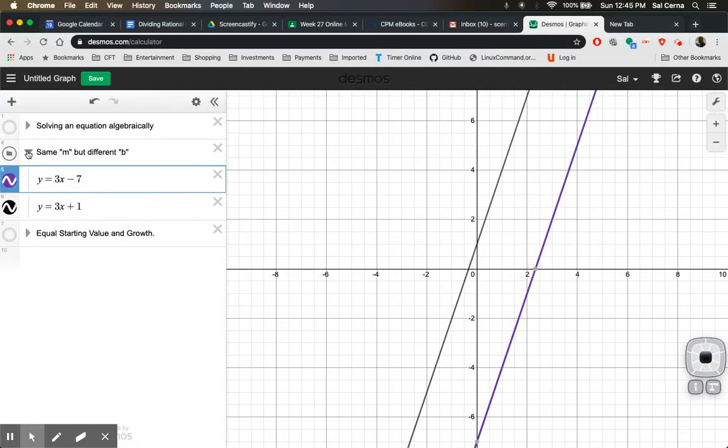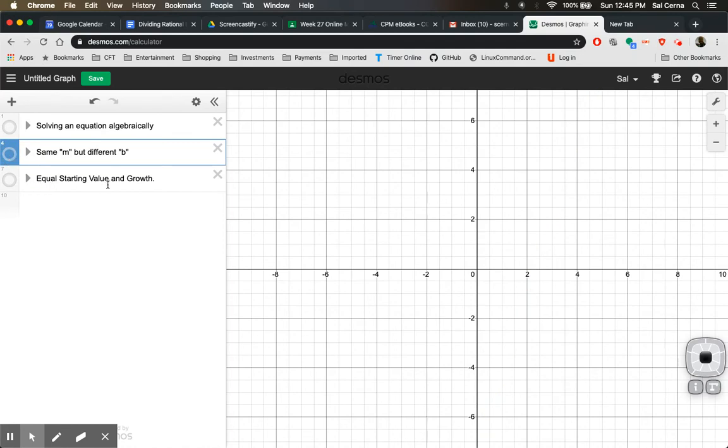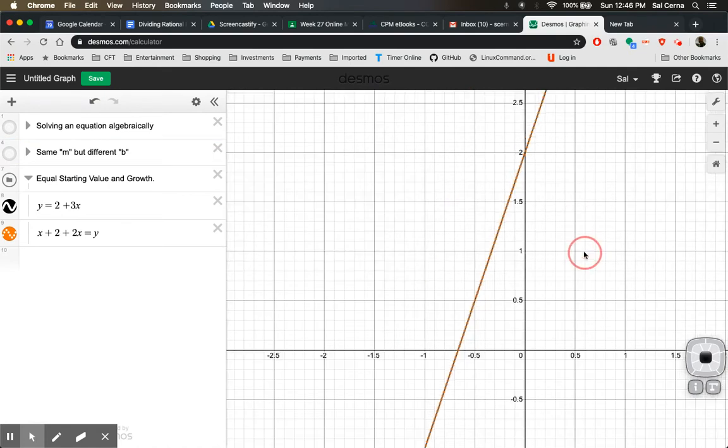I'm going to graph these two equations on Desmos and see what our linear lines or line will look like. They have equal starting value and growth. And what happens? We get a single line. Notice that I graphed the equation as I wrote it. So even if you simplify it or you just type it like this, when you graph it geometrically, you'll still get your linear lines. In this case, notice that I have orange and black. Orange is in polka dots. Black is a straight line. It's identical.